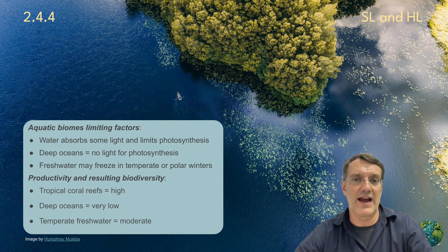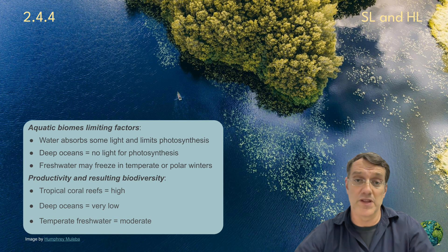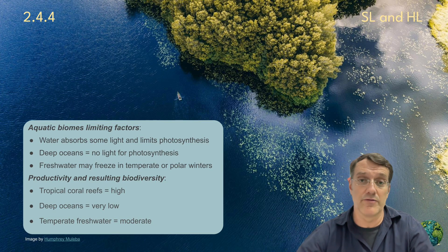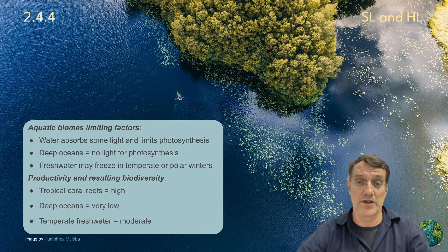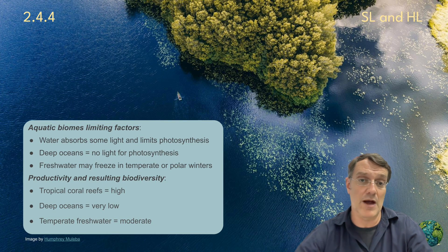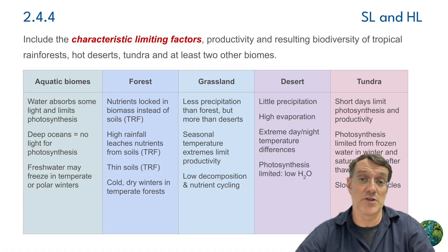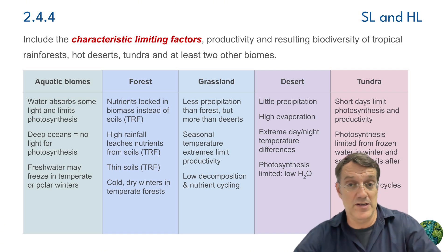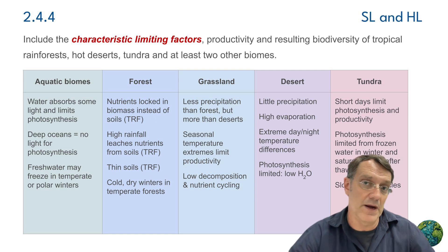Aquatic biomes face unique limiting factors. Water absorbs light, restricting photosynthesis at depth — in deep oceans, there's no light at all for photosynthesis. In temperate and polar regions, surface waters may freeze seasonally. This creates varying levels of productivity, from the high-productivity coral reefs in tropical areas to low-productivity deep ocean zones. Each biome type has evolved distinct strategies to cope with its particular environmental challenges, influencing both productivity and capacity to support biodiversity.